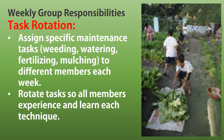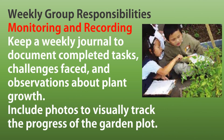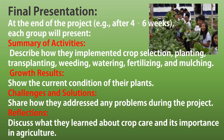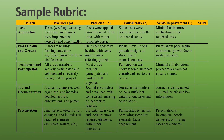At the end of the project, each group will present a summary of your activities, detailing how you selected, planted, transplanted, weeded, watered, fertilized, and mulched your crops. You will also showcase the current condition of your plants and discuss any challenges you faced along with the solutions you implemented. Finally, groups will reflect on what you have learned about crop care and its importance in agriculture, emphasizing the practical skills and knowledge gained throughout the project.